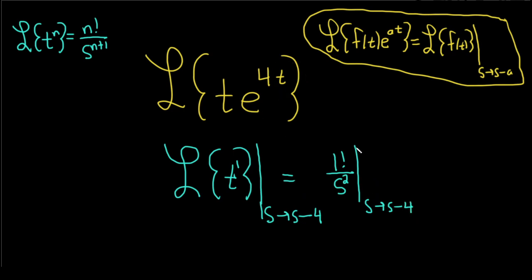Really, really nice. And now we're ready to make the substitution. So now what you do is basically replace the s with s minus 4. So this is 1 over parentheses s minus 4 squared. And that would be the Laplace transform of t times e to the 4t.